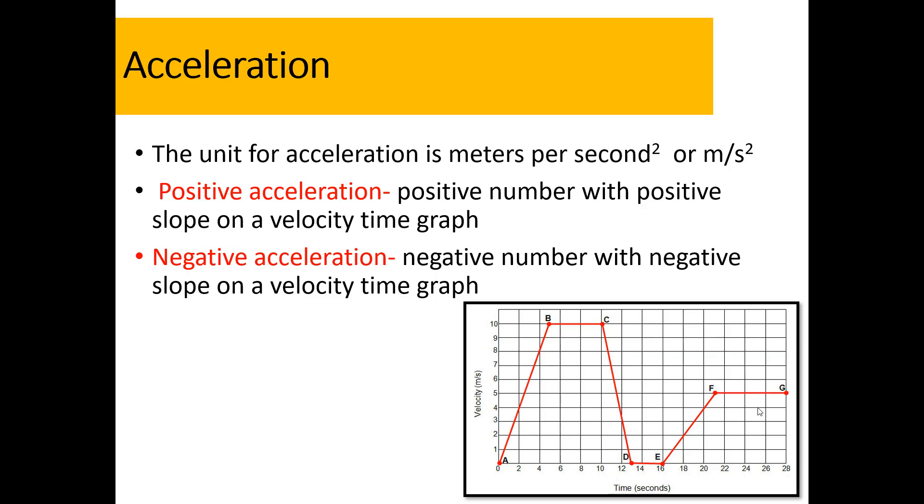I've got the unit for acceleration there and what it means for positive acceleration versus negative acceleration. Again, you can see this on the velocity time graph. Here, velocity is increasing, so I have acceleration. And then from point C to point D, I have negative acceleration, which we call deceleration. And then these points here, like point B to C and D to E and F to G, that is the velocity remaining constant. So no change in velocity means no acceleration. Of course, if this object were changing direction, that would be a different story, but we don't know that from this graph.